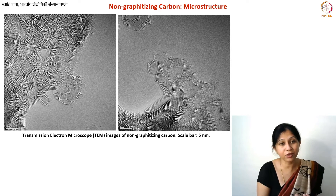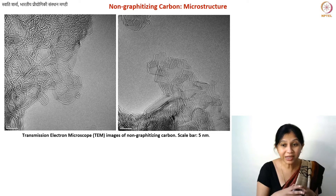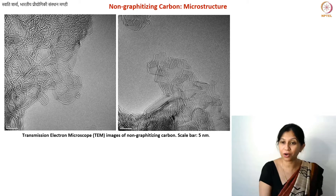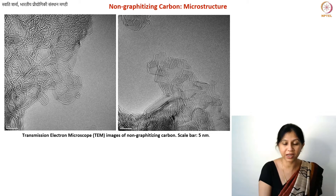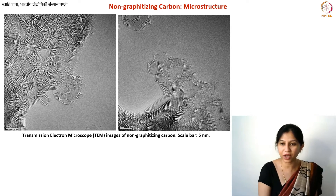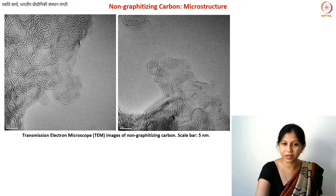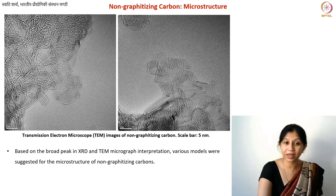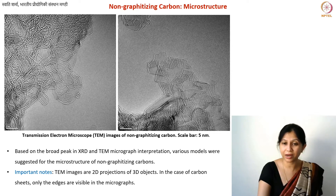You will not even see any difference in the intensity of those two lines because they are both in the focal plane. It is very difficult to differentiate between different structures, but TEM gives you a very good idea of what kind of material it is. Based on TEM images, many models have been proposed for the microstructure of non-graphitizing carbons. In terms of microstructure, let's talk about all non-graphitizing carbons in general.